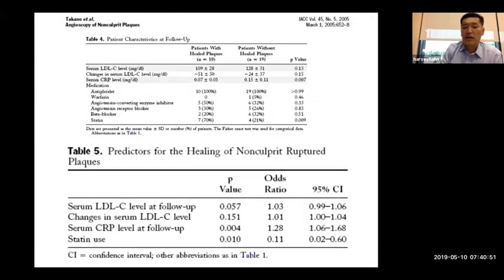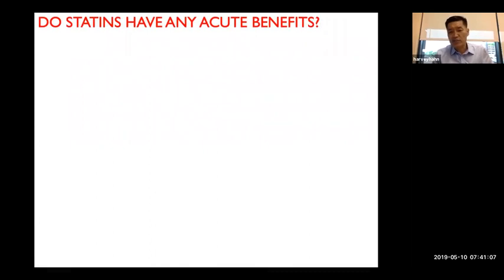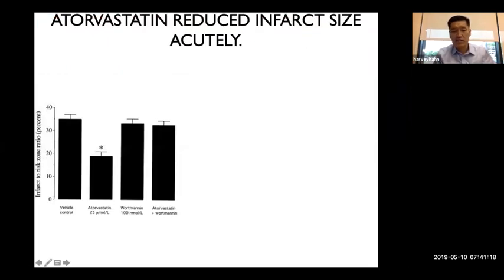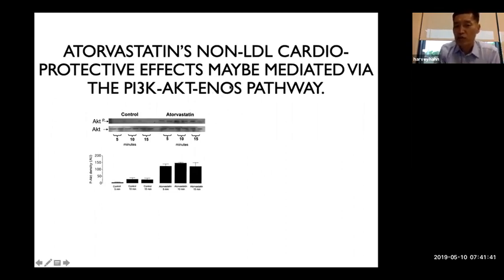Predictors of non-healing plaques include high cholesterol and high CRP, a marker of inflammation. Statins also have acute benefits — giving Lipitor at the time of a heart attack results in a smaller infarct. This works through the PI3K-Akt-eNOS (endothelial nitric oxide synthase) pathway, the same pathway nitroglycerin works on — cholesterol medications increase nitric oxide in coronary arteries, dilating blood vessels and reducing heart attacks.